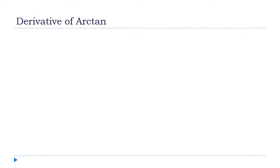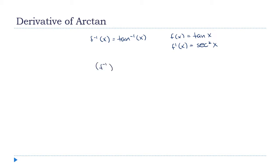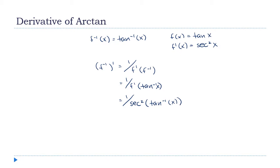Now let's find the derivative of the arc tangent — the inverse tangent. We start the same way: f inverse of x is the inverse tangent of x, which means f of x is the tangent of x, and f prime of x is secant squared of x. Applying the formula, f inverse prime is 1 over f prime of f inverse, which is 1 over secant squared of the inverse tangent of x.